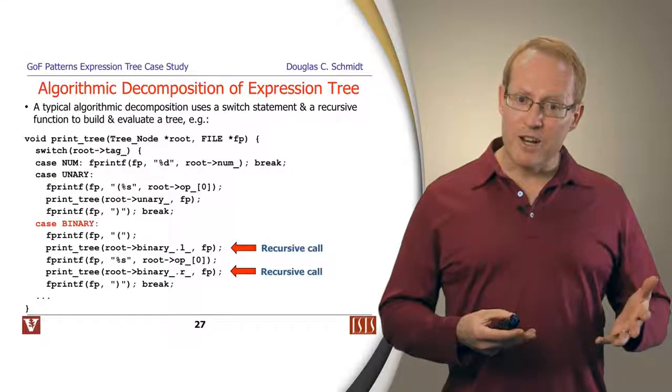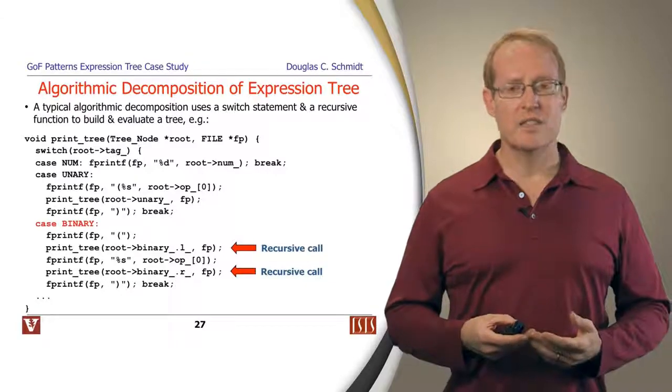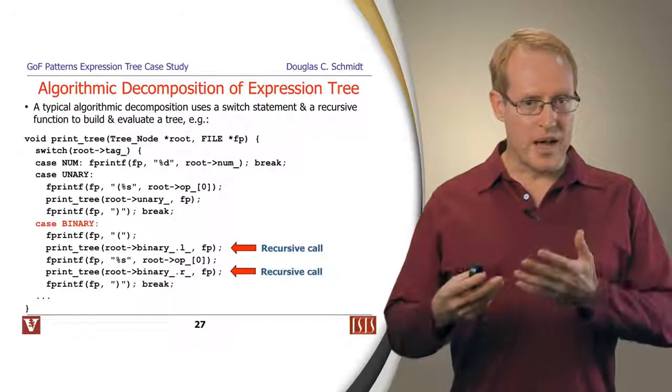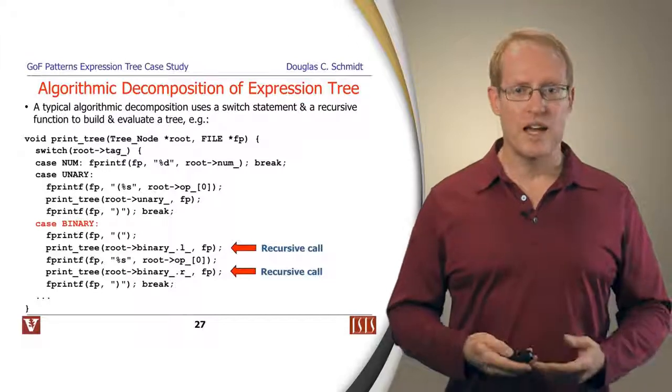If it's a binary node, it'll go ahead and first recurse down the left side of the subtree. Then when it comes back up, it'll go ahead and print out the operator, and then it will go and recurse down the right side of the subtree.